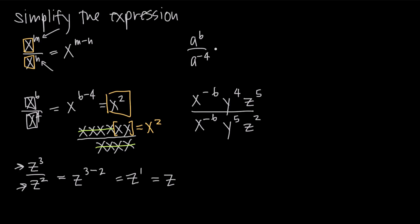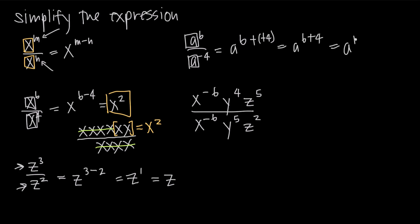We can also use this rule when we have negative exponents involved. Because our bases are the same — a and a — this is going to be equal to a to the exponent in the numerator, six, minus the exponent in the denominator, which is a negative four. So we get a to the six minus a negative four, which is a to the six plus four, because subtracting a negative is the same as adding. Six plus four is ten, so this is a to the tenth power. We can double-check: moving a to the negative four from the denominator up to the numerator makes it a to the positive four, giving us a^4 times a^6, or a to the four plus six, which is a to the ten.